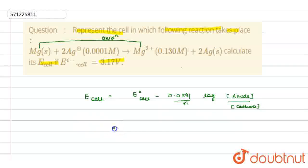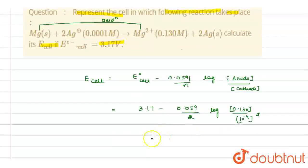So value of E not cell given is 3.17 and number of changing of electron is 2. Concentration of anode, anode means where oxidation takes place. That means Mg2+ ion is given as 0.130 and concentration of cathode, that means Ag+ ions are 10 raised to power minus 4 square because its stoichiometry is 2.